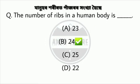Question 8. The number of ribs in a human body is? Option B: 24.